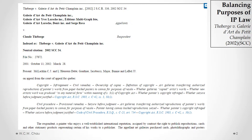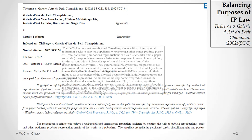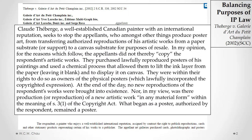This balancing by intellectual property law of individual interests and societal interests is expressed in the Supreme Court of Canada decision of Théberge and Galerie d'Art. In this case, the copyright owner was a well-known Canadian artist who had produced a poster of one of his paintings, and a gallery that purchased the poster transferred and converted it into a canvas painting for the purposes of resale.